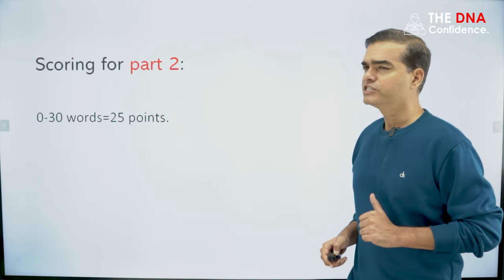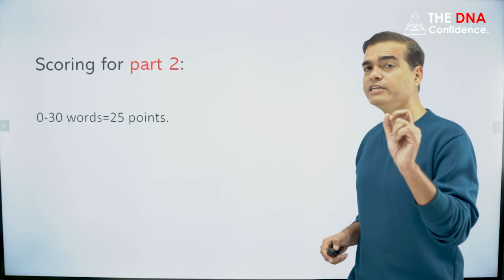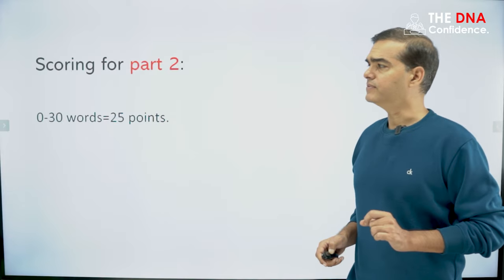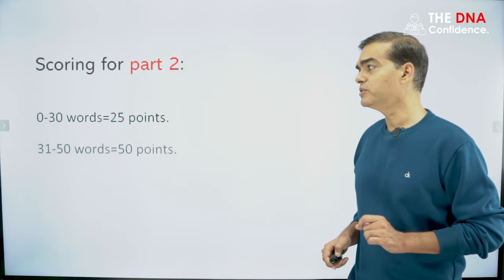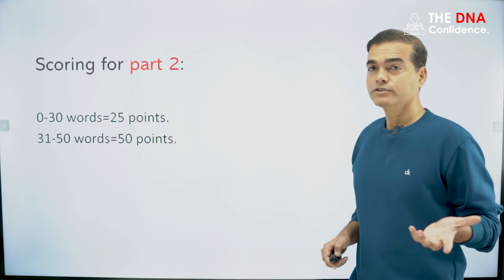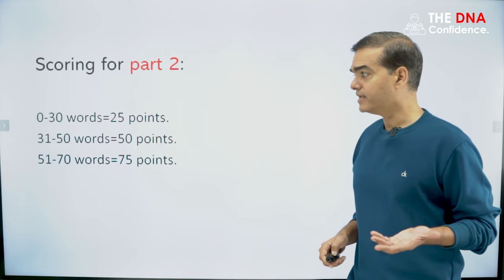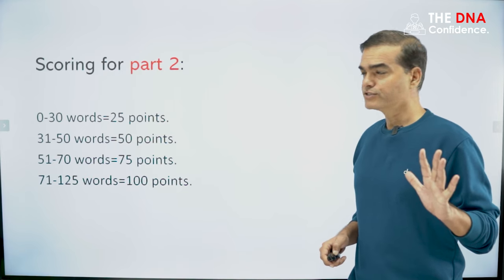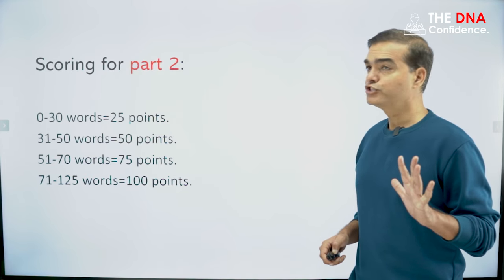Part one and part two are there. So part one is finished. Now let us go with part two. Part two is how many words you have written starting with the alphabet P. Suppose you have written 30 words, then your score is 25 points. Suppose you have written 31 to 50 words, so your score is 50 points. And in this way, your score will be there. So this is for part two.